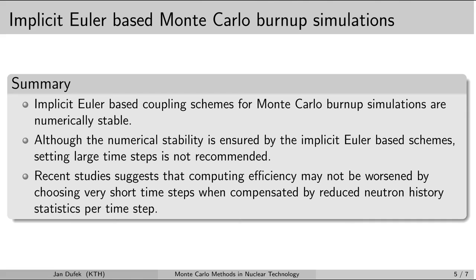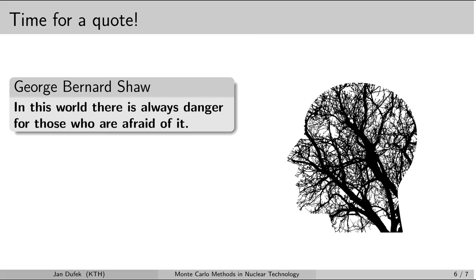I recommend using coupling schemes based on the implicit Euler method. Unfortunately, not many Monte Carlo burn-up codes implement this scheme, but it is currently available in the MCB code and in Serpent 2, and hopefully more codes will adopt it. That is all for now — have a nice day, and I'll see you next time!